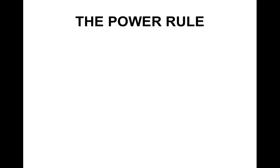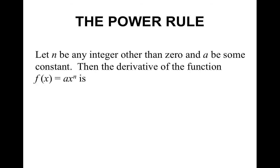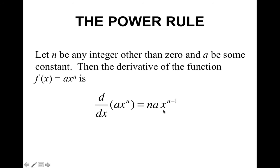The power rule — the one that you will be using a lot. Let n be an integer other than 0, and a be some constant. Then the derivative of f of x equals a times x to the n power is n times a times x to the n minus 1. You take the current power, bring it down in front and multiply it with the coefficient, then subtract 1 from the exponent.